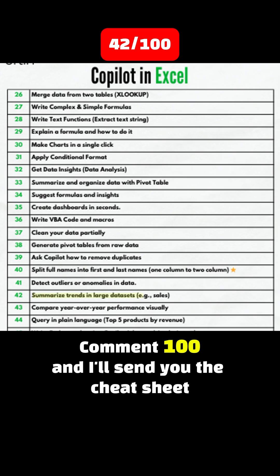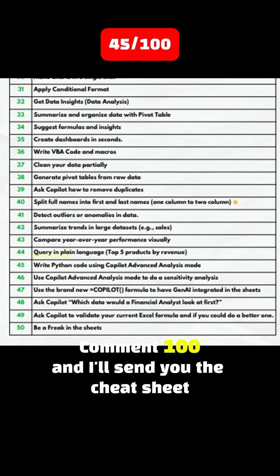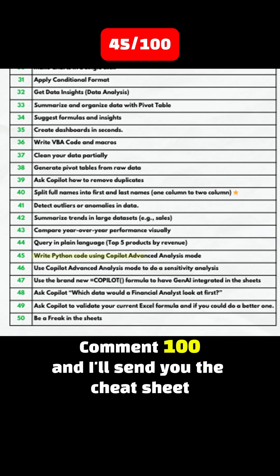Tip 42: Summarize trends in large datasets — for example, sales. Tip 43: Compare year-over-year performance visually. Tip 44: Query in plain language — for example, top 5 products by revenue. Tip 45: Write Python code using Copilot advanced analysis mode. Tip 46: Use Copilot advanced analysis mode to do a sensitivity analysis. Tip 47: Use the brand new =COPILOT formula to have generative AI integrated into your spreadsheet. Tip 48: Ask Copilot which data a financial analyst would look at first.